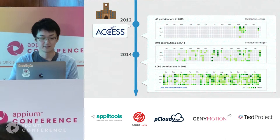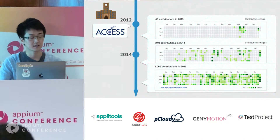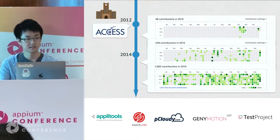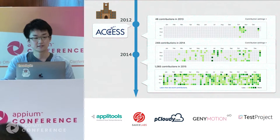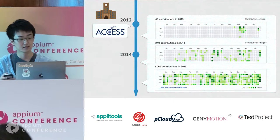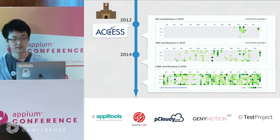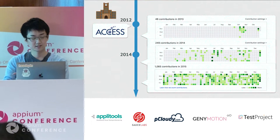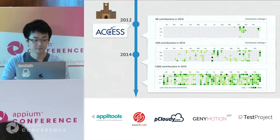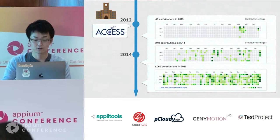I know GitHub activity is not the only thing to indicate OSS activities, but let me show my GitHub to show my change. My first commit was to practice mobile automation using Appium — just for me. But after 2014, the number of commits increased, and the target was not only Appium but also other OSS projects.